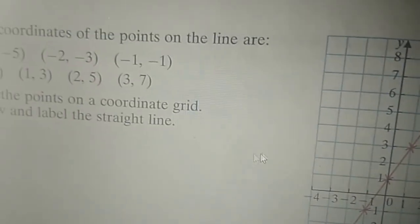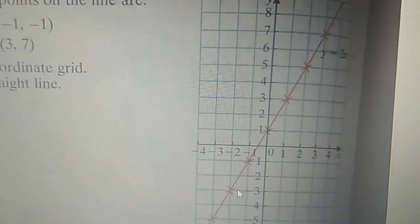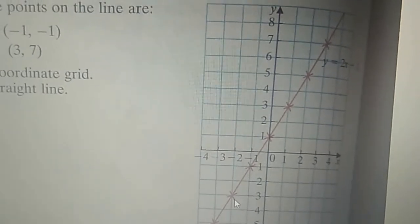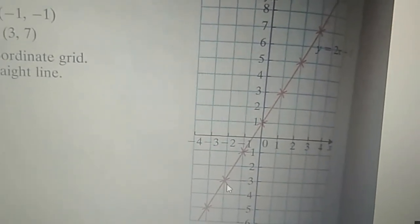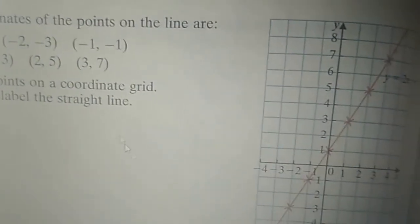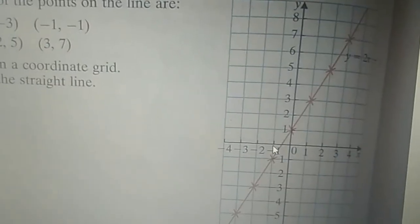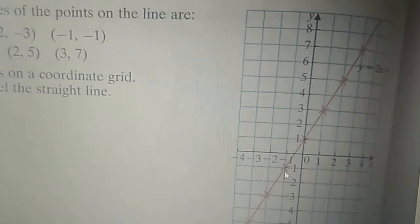The second coordinate is minus 2, minus 3. Minus 2 on the x-axis and minus 3 on the y-axis — they have put a cross sign to denote that coordinate. Then minus 1, minus 1: minus 1 on the x-axis and minus 1 on the y-axis — this is that coordinate.